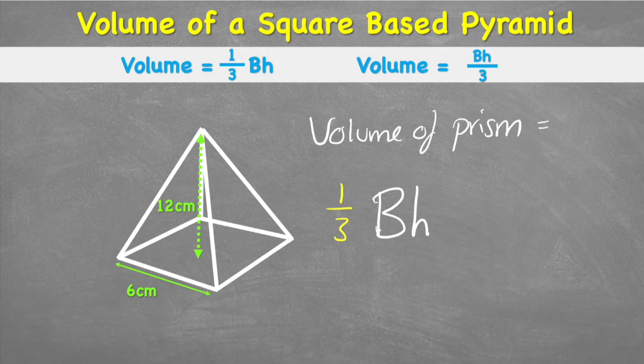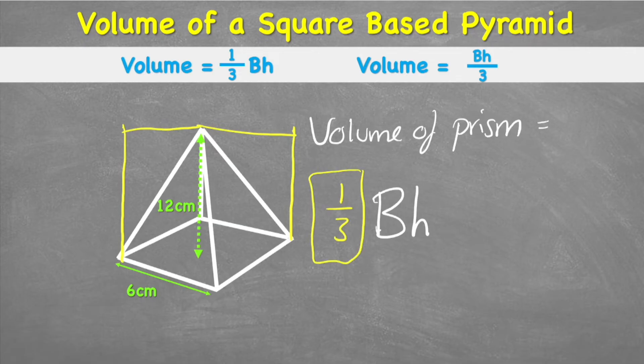If we imagine we've got a cuboid here, the pyramid inside would only take up exactly one-third of the space. So the formula for the volume of a pyramid is one-third times the area of the base times height, or in other words, volume equals base area times height divided by 3—that's exactly the same, and we'll see why in a minute.